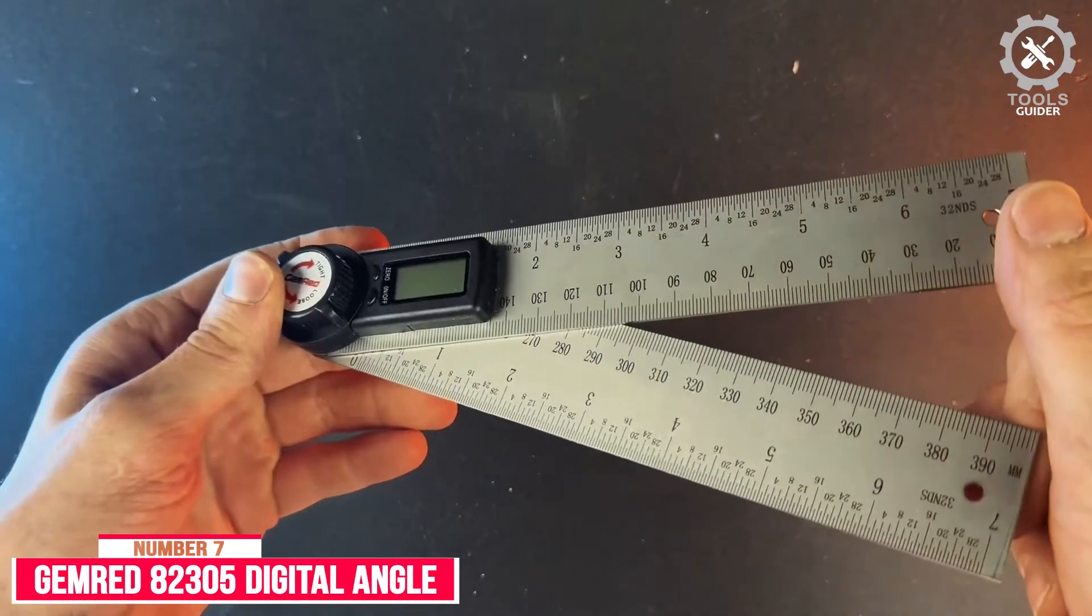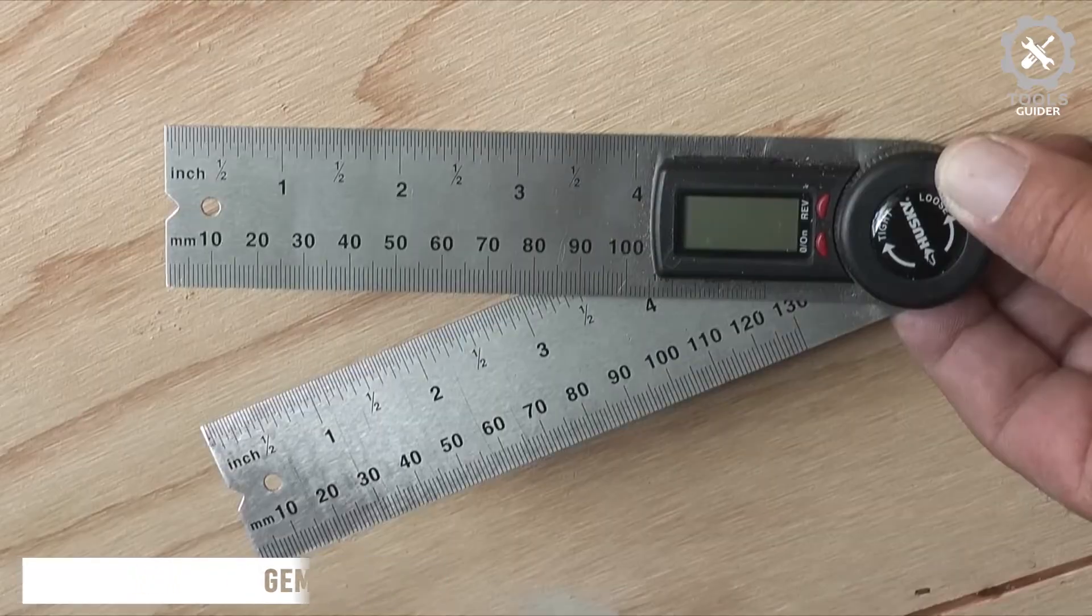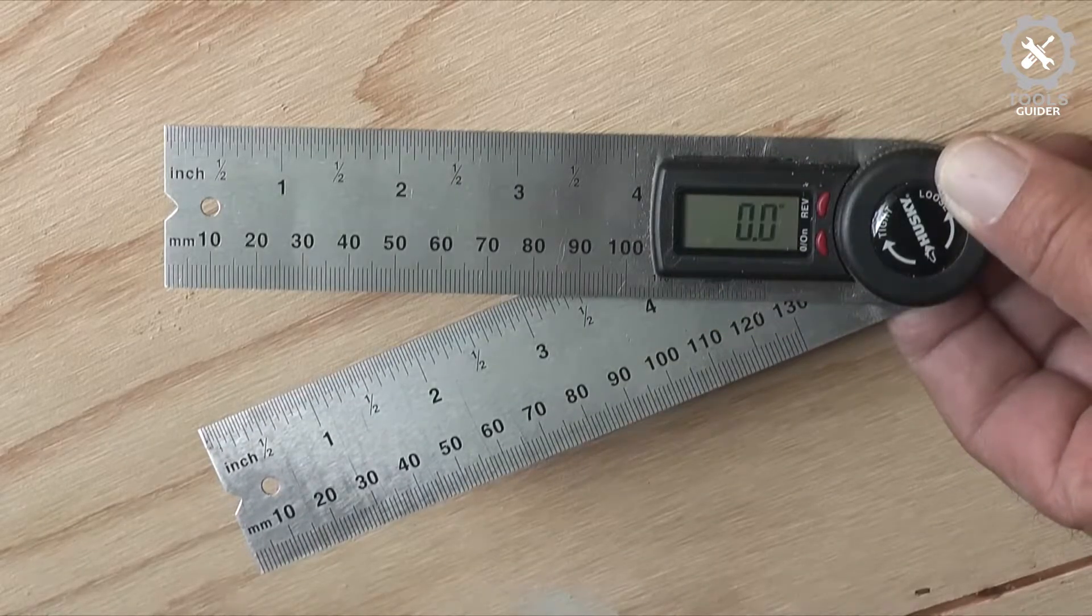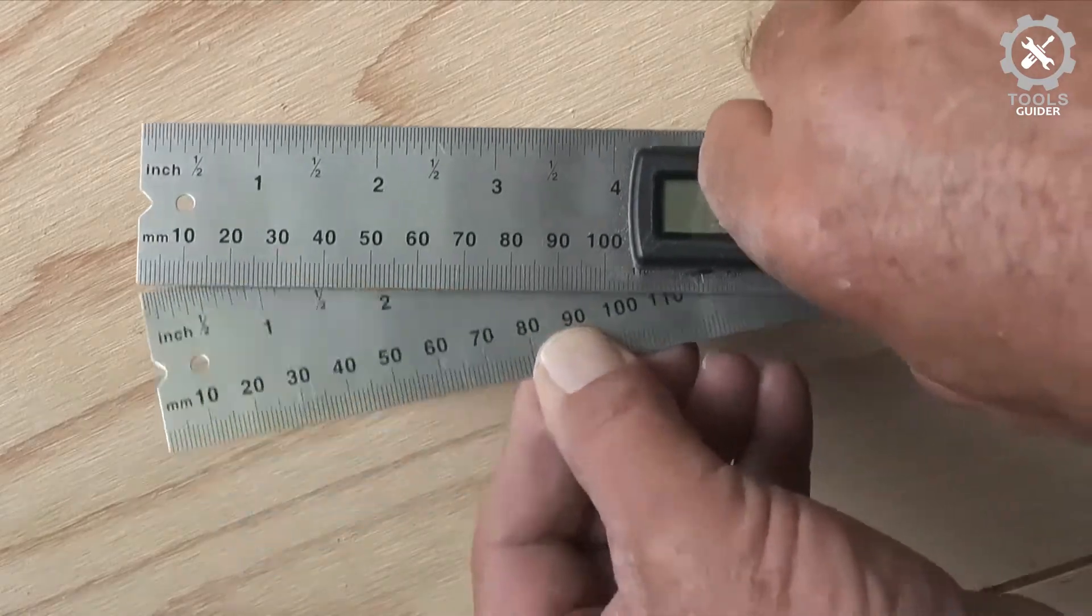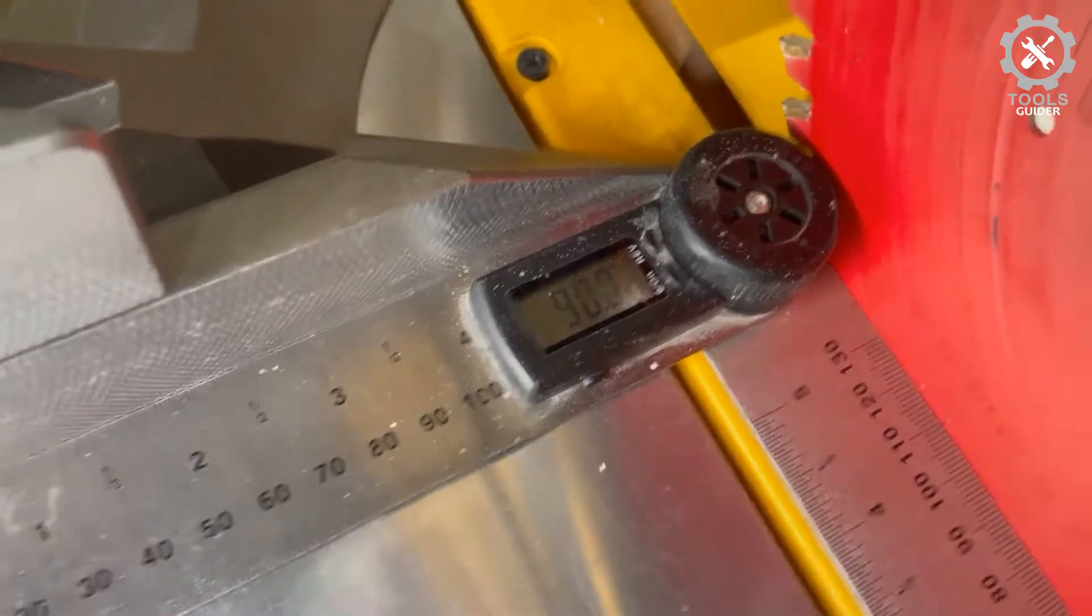The Gemred A2305 Digital Angle Finder Protractor is a patented measuring ruler and protractor that can easily measure the outside and inside angles. The digital display makes it very easy to read.